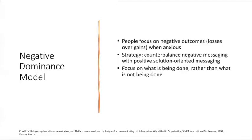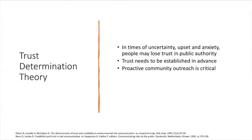The negative dominance model recognizes that people focus on negative outcomes when they're anxious — they focus on losses rather than gains. The strategy in risk communication is to counterbalance negative messaging with positive, solution-oriented messaging, focusing on what's being done rather than what's not being done. You can see those strategies playing out with COVID-19 vaccination in Scotland, where the public awareness campaign focuses on what's been achieved so far rather than on what's left to go.